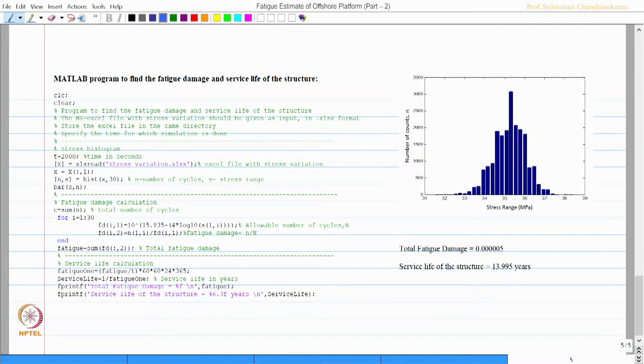It specifies the time for which simulation is done. It plots the stress histogram and then a typical output as total fatigue damage and service life or as an output for this particular problem.